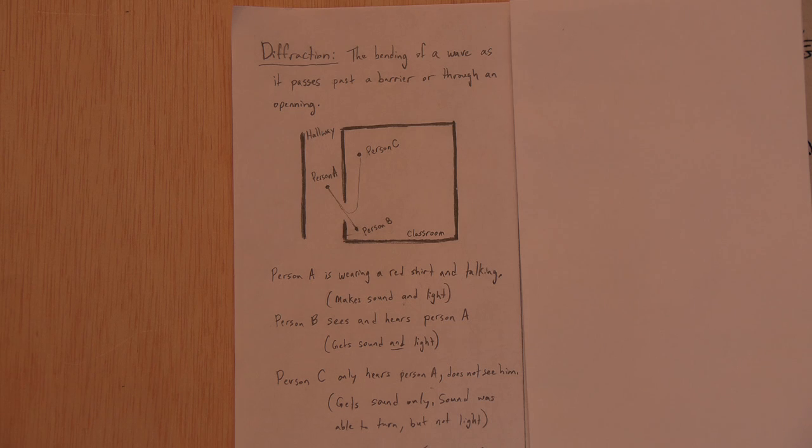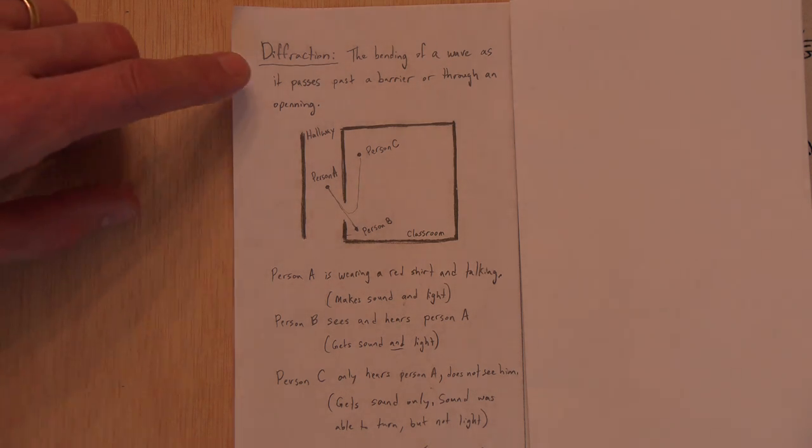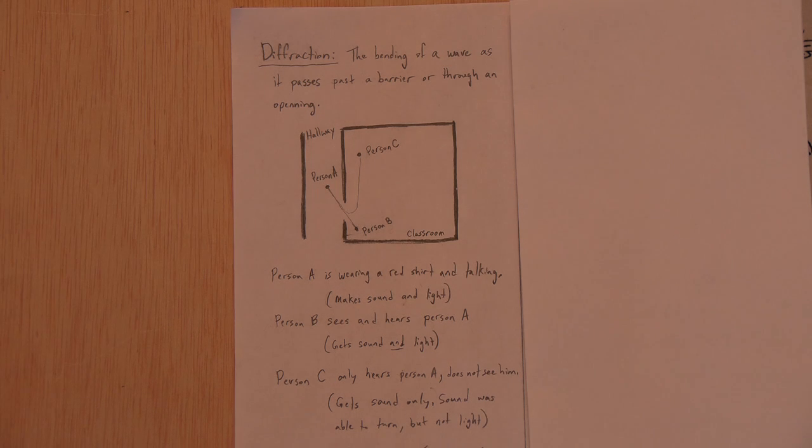So what is diffraction? It's the bending of a wave as it passes past a barrier or through an opening. All waves diffract. They all bend in the right conditions. Light, sound, water, as you'll see in the video. But the amount of bending depends on the circumstances, the situation.